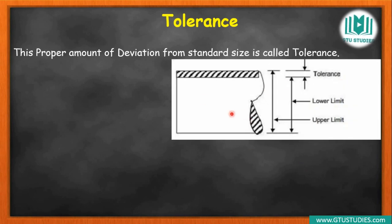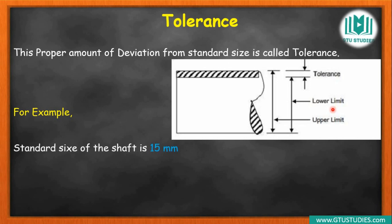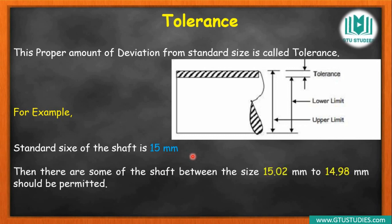Suppose we take a cylindrical part whose cross-section is circular. For any basic size, there will be a limit slightly above and slightly below. So for any basic size, we define both an upper and lower limit. For example, for a standard cylindrical shaft of diameter 15 mm, we decide that the shaft can be between 15.02 mm on the upper side and 14.90 mm on the lower side.